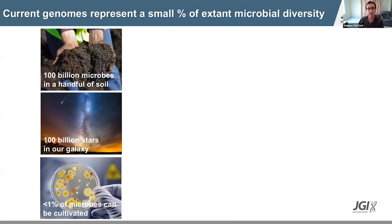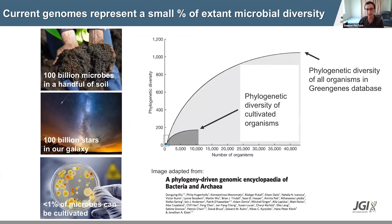But the vast majority of organisms on Earth cannot be cultivated and grown in the lab. This is really probably the greatest obstacle to obtaining genome sequences for these organisms. This was illustrated nicely in a paper published around 2004 by Dong Ying Wu and Jonathan Eisen and several current and former members of the JGI.